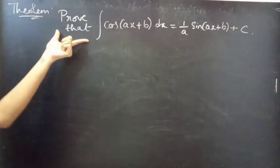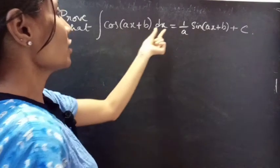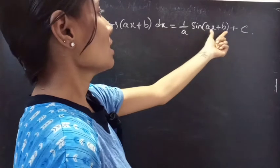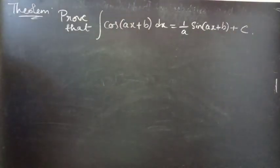Theorem statement: Prove that integral cos(ax+b) dx equals 1 by a into sin(ax+b) plus integral constant C. Prove.